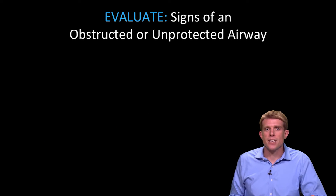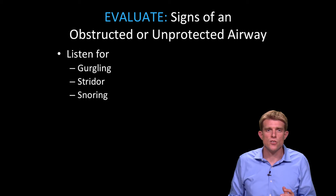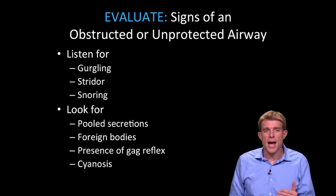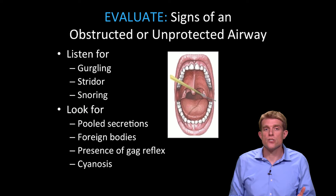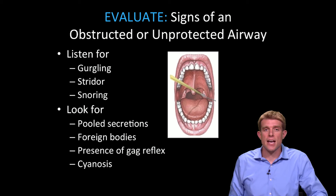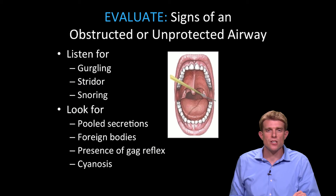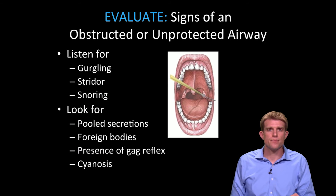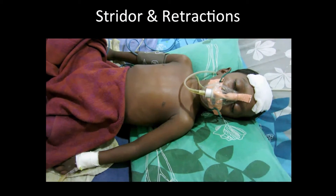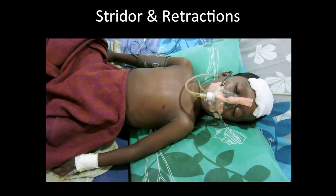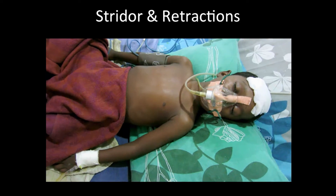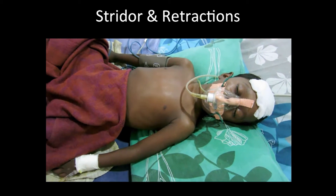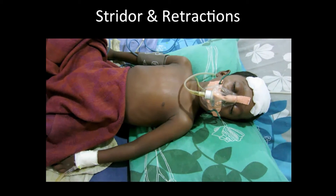How do you check for an unprotected or obstructed airway? One of the best things to do is start by just listening. Do you hear any gurgling, stridor, or snoring? Then take a look in the back of the throat for things like pooled secretions, blood, or any foreign bodies. I also check a gag reflex using a tongue depressor, or potentially even better, a suction catheter, touching it to the tonsil or posterior tongue to see if the patient will gag. Then I look for signs of cyanosis. Take a listen to this child — you can hear the patient clearly has stridor, so their airway is not normal, and you're going to want to initiate some basic airway maneuvers right away.